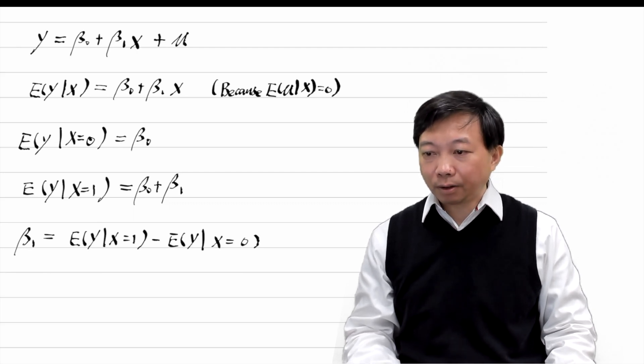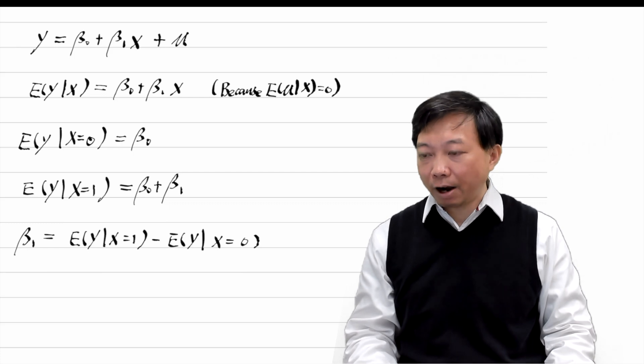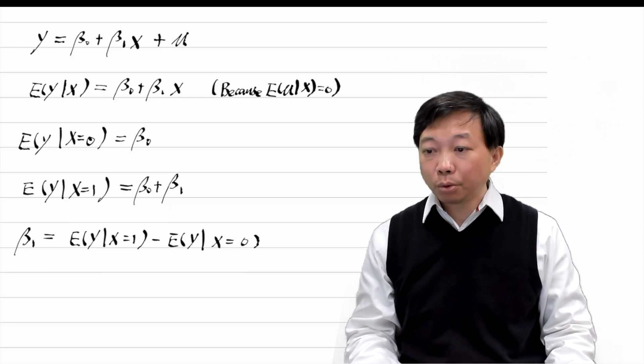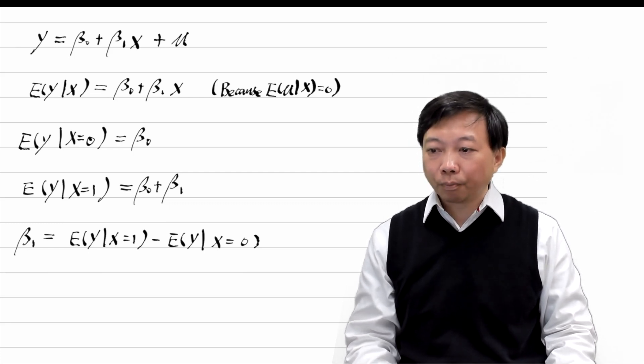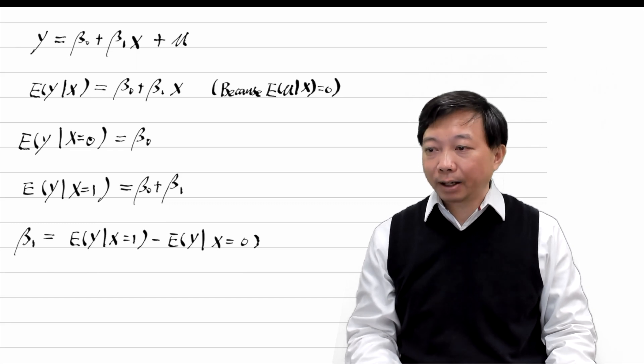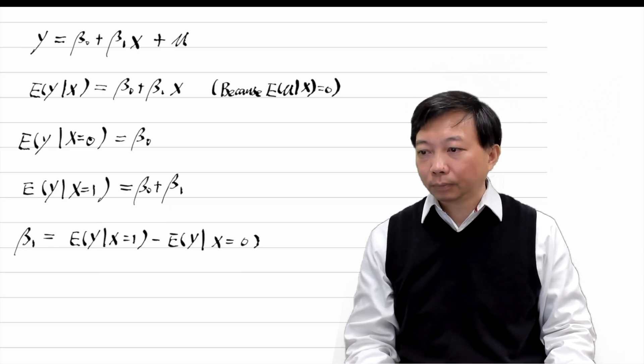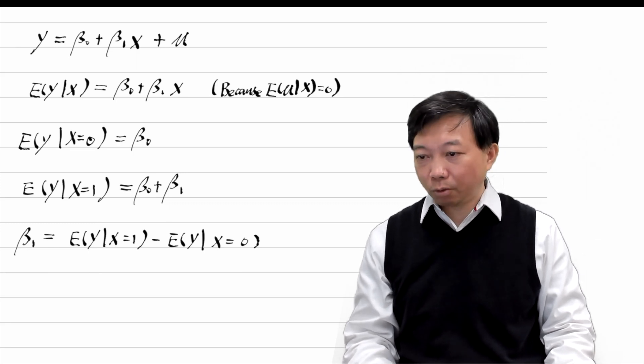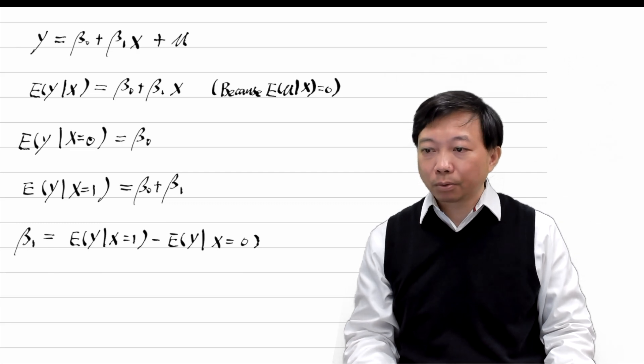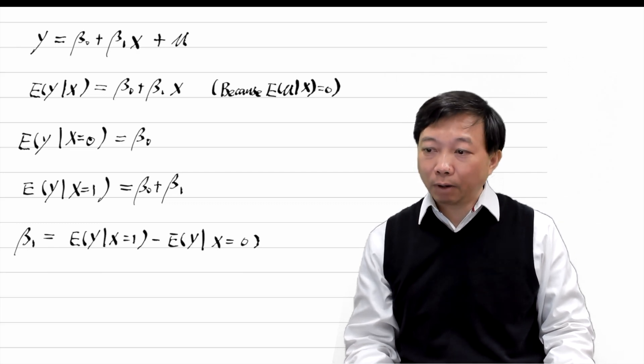So beta 1 is the difference in the outcome variable y between the two groups of individuals. One group has its explanatory variable x equal to 0, such as male workers. The other group's explanatory variable x equals 1, such as female workers.